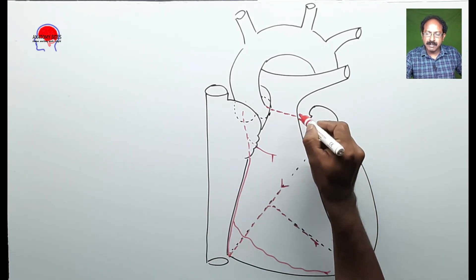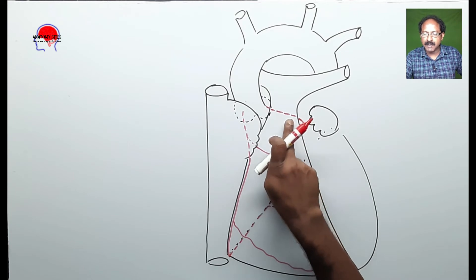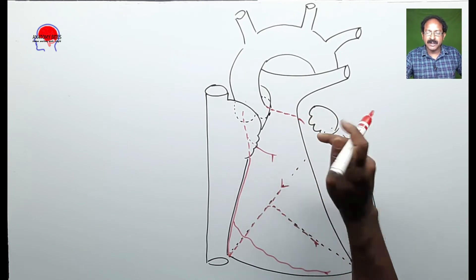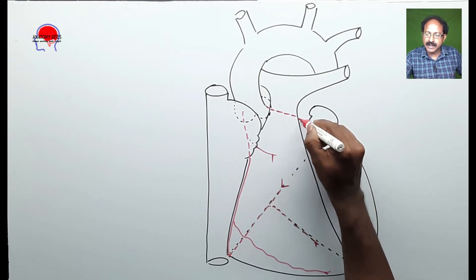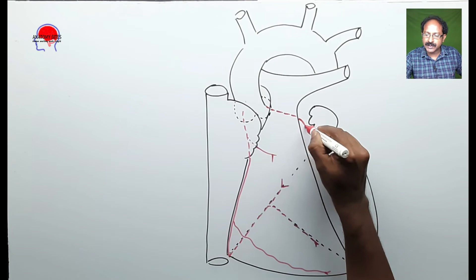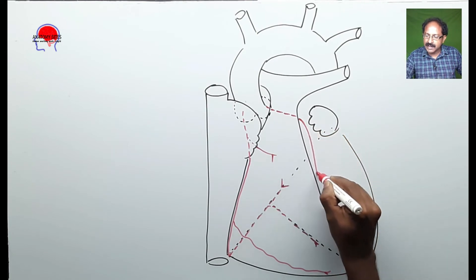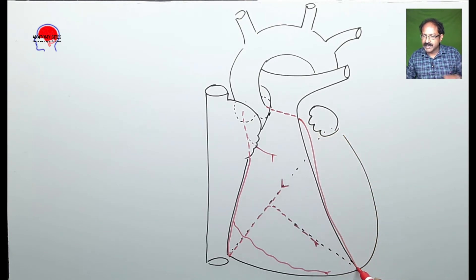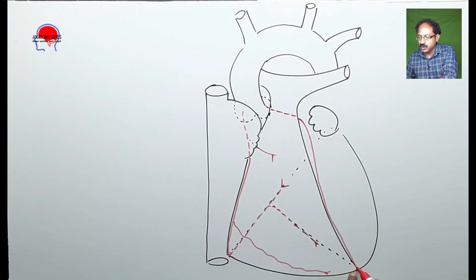After immediately reaching between the pulmonary trunk and the left auricle, the left coronary artery divides into two branches. One is the anterior interventricular artery, which descends through the anterior interventricular groove.